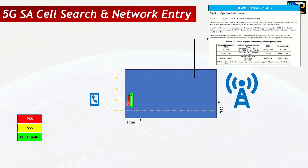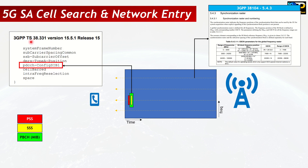PSS and SSS together also provide the UE with the PCI — the physical cell identity — of the cell. After this, the UE reads the PBCH, which carries the MIB — the master information block. The MIB, defined by 3GPP 38.331, carries the subframe number, subcarrier spacing offset, and importantly the PDCCH config SIB1, which gives the location of coreset 0 and ultimately the location of SIB1.